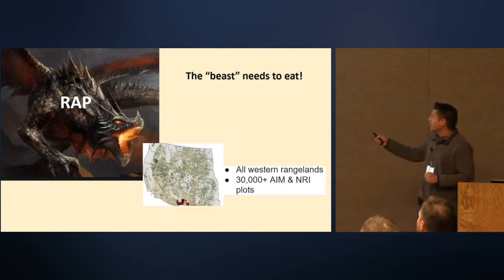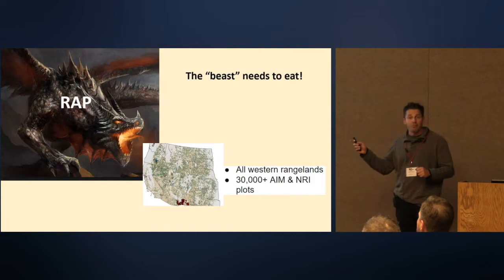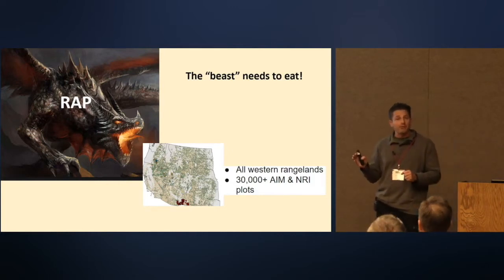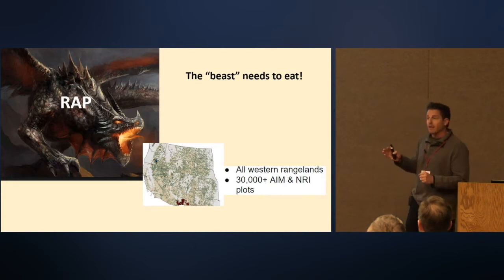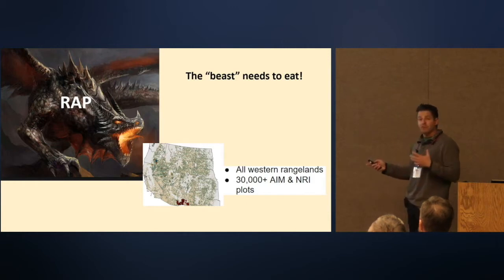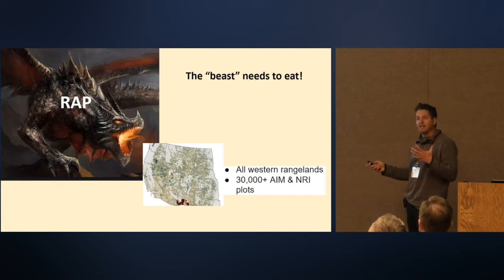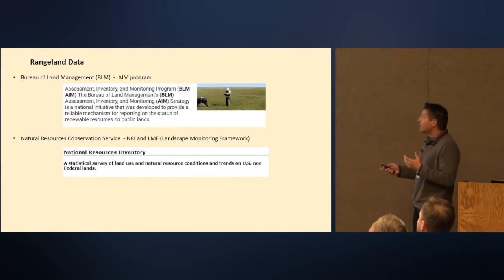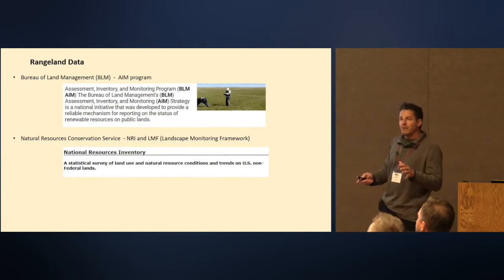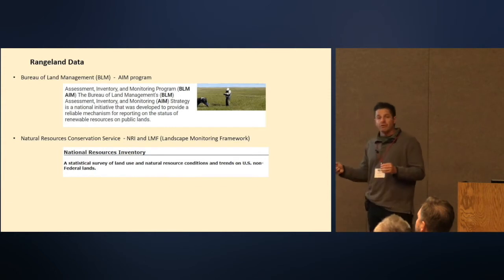In the previous talk you heard 30,000 data points — we're closer to 50,000 with NRI and AIM data. We need to get that data into the hands of the people who need to use it. I'm going to refer to the WRAP tool as the beast, because I think of these beasts as out there eating up this data and needing it to survive. It's my job to provide that food for them. What do these beasts eat? They eat rangeland data.